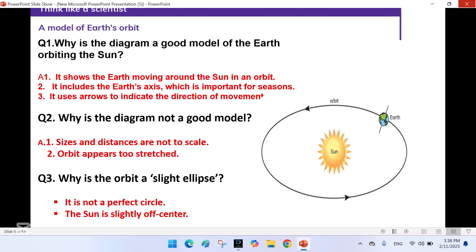Why is the orbit a slight ellipse? It is not a perfect circle. The sun is slightly off-center.